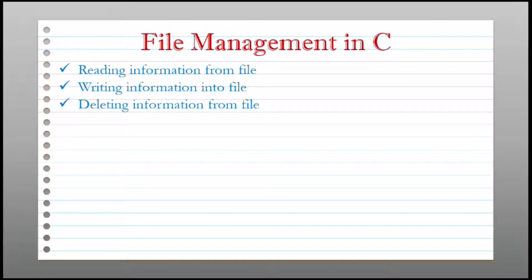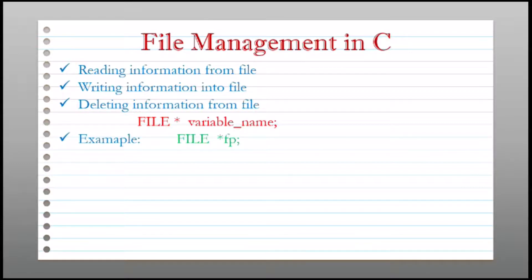To perform any operations on a file we need a pointer variable of type FILE. This is the syntax for declaring a pointer variable of type FILE, where FILE in capital letters is the data type and the variable name is any valid variable name. Because we use the star operator, it is a pointer variable. For example, FILE *fp — here FILE is the data type and fp is the pointer variable, which can be used to point to the address of a file.